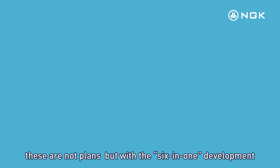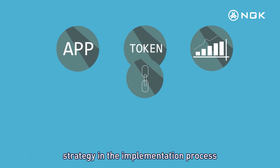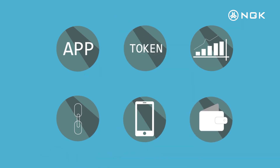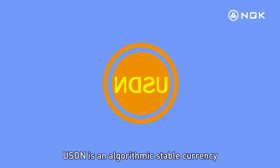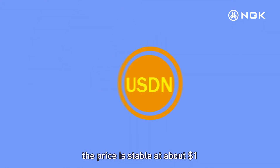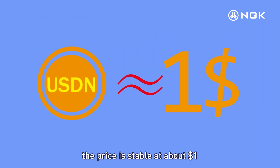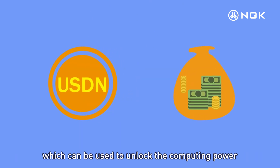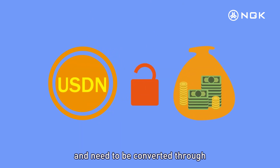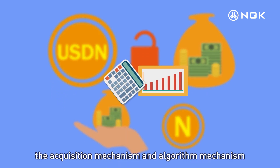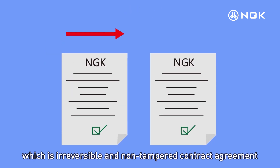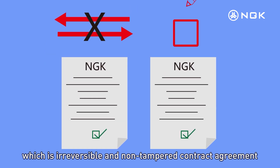These are not just plans, but with the 6-in-1 development strategy and its implementation process, each step is carried out in an orderly manner to fully enter the mainstream market. USDN is an algorithmic stable currency, with its price stable at about $1. Through the algorithm, price stability is achieved, and the circulation of the market determines the circulation of USDN, which can be used to unlock computing power and needs to be converted through mainstream currency or NGK. The acquisition mechanism and algorithm mechanism operate through intelligent contracts, which are irreversible and non-tampered contract agreements.